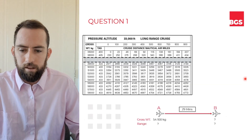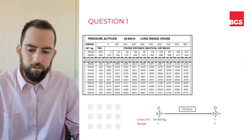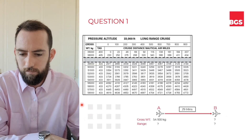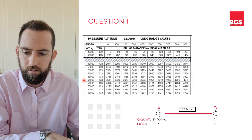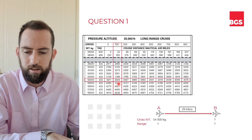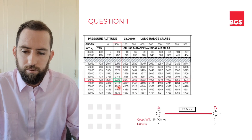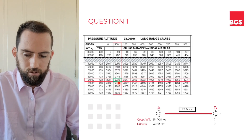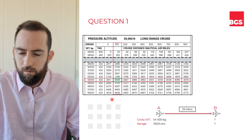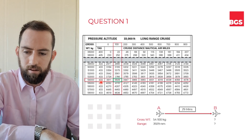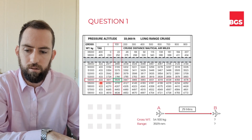Zooming in on the table, let's get the aircraft's range. Going up the left-hand column, we're looking for the row with 54,000 kgs, then find where that meets the 100 kg increment column — our aircraft's range is 3,929 nautical miles. We can also pull out the true airspeed for that particular gross weight, which is 433 knots.